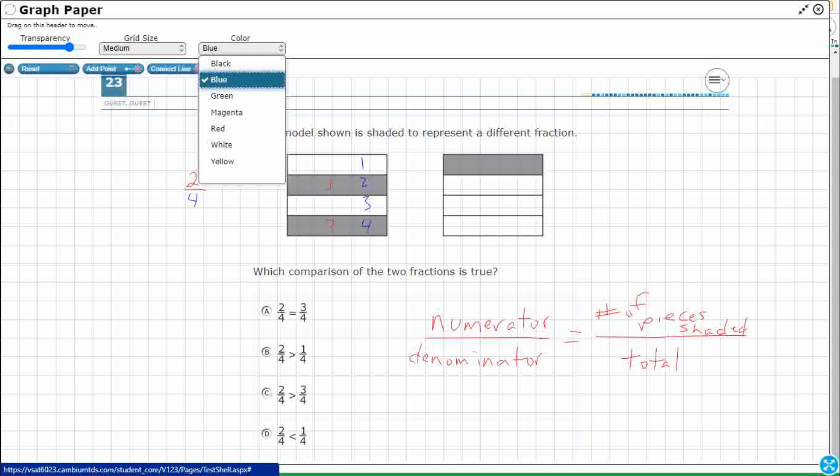So let's do the same thing over here on the right. I've got one piece shaded, excuse me. And then my denominator needs to be how many pieces total. We've got one, two, three, four. So you notice that they're both fourths. And I've got two fourths on the left, I've got one fourth on the right.